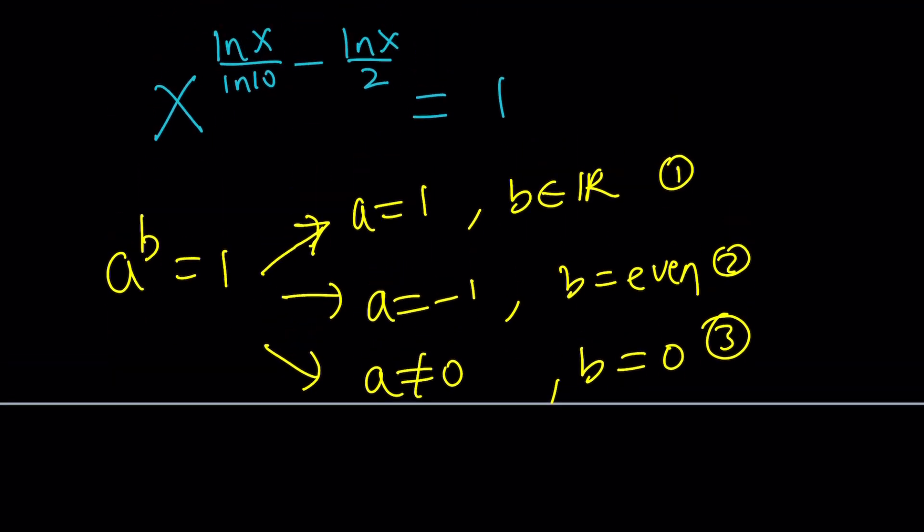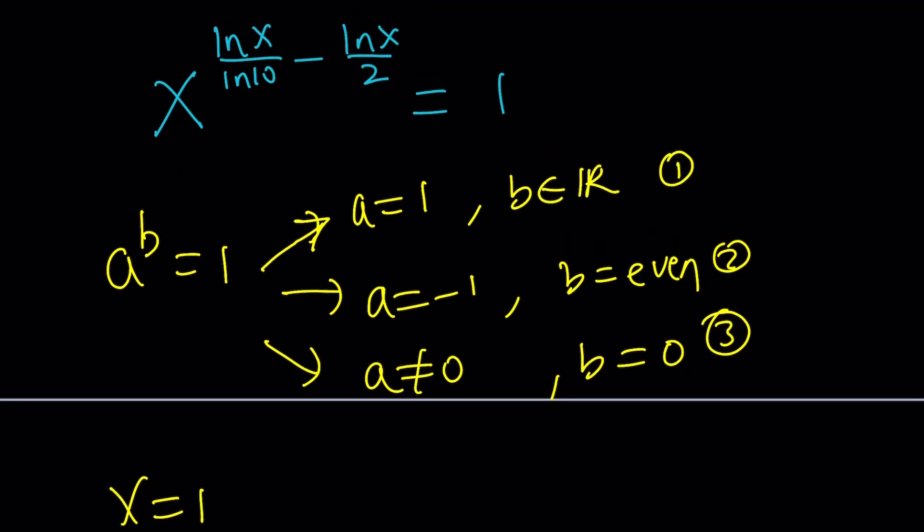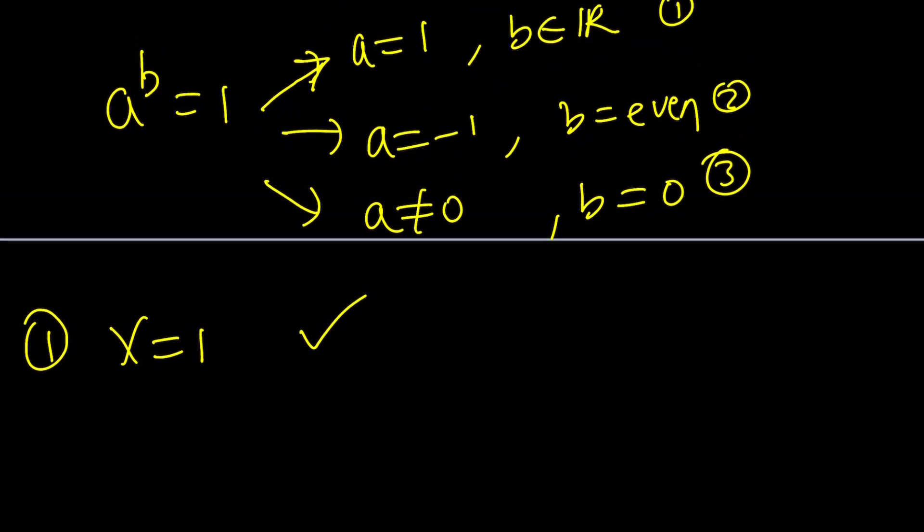First case, a equals 1. So if x is equal to 1, nothing undefined in the exponent, x equals 1 is going to work. So that's a valid solution. Good. That's probably something that you guessed initially, right?